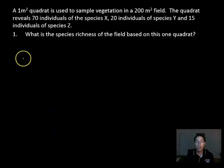All right, let's see how to solve these. We have a one-meter square quadrat that's used to sample vegetation in a 200-meter square field. The quadrat reveals 70 individuals of species X, 20 of species Y, 15 of species Z. What is the species richness? Remember, species richness is just the number of different species you have. We only have three species in this, so our answer is three for species richness. That one was pretty easy.